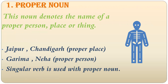Our first type of noun is the proper noun. What is a proper noun? It's the specific name of any person, place, or thing — whatever is proper. Like Jaipur, Chandigarh, Garima, Neha — these are all proper nouns. And because the proper noun refers to one specific thing, the singular verb will always come with it.